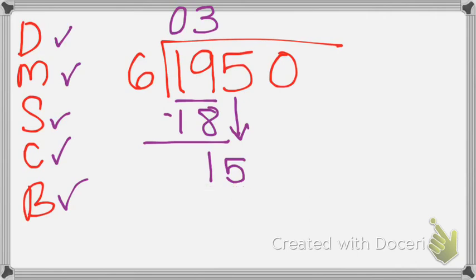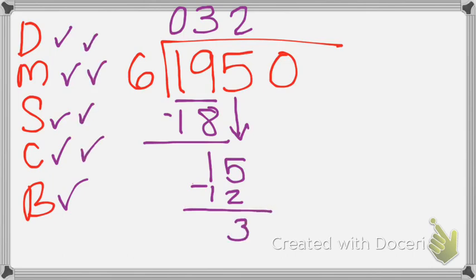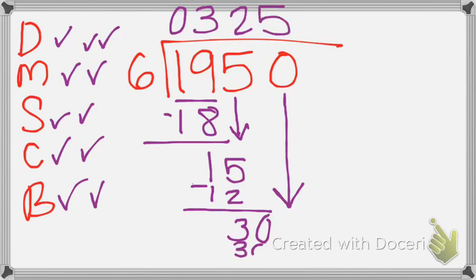Six goes into fifteen two times, because six times two is twelve. I subtract: fifteen minus twelve gives me three. Three is less than six, so I'm good to bring down the last place value. Long division is simply repeating the same steps over and over. My biggest tip is to make sure that every time you subtract, you are always checking off your steps. So, how many times does six go into thirty? That's five times, because six times five is thirty. I subtract and get zero.